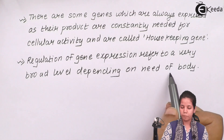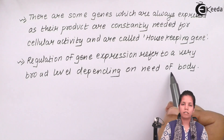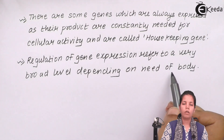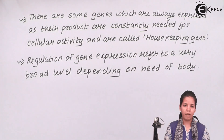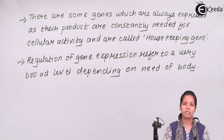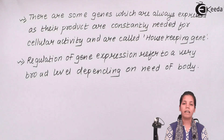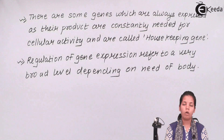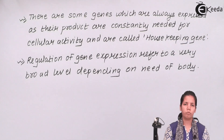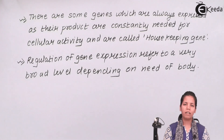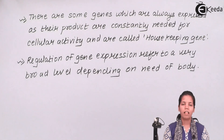Regulation of gene expression refers to a very broad level — it depends on the need of the body whether genes will be expressed or repressed, all depending on whether a particular protein is required. For example, oncogenes are cancerous genes and are never housekeeping genes. They are not triggered easily; only certain diseases or certain toxic or chemical agents can induce oncogenes. All forms of tumors are never housekeeping genes — they are triggered into rapid mitosis processes. Students, I hope you are clear with the concept of what housekeeping genes are. Thank you.